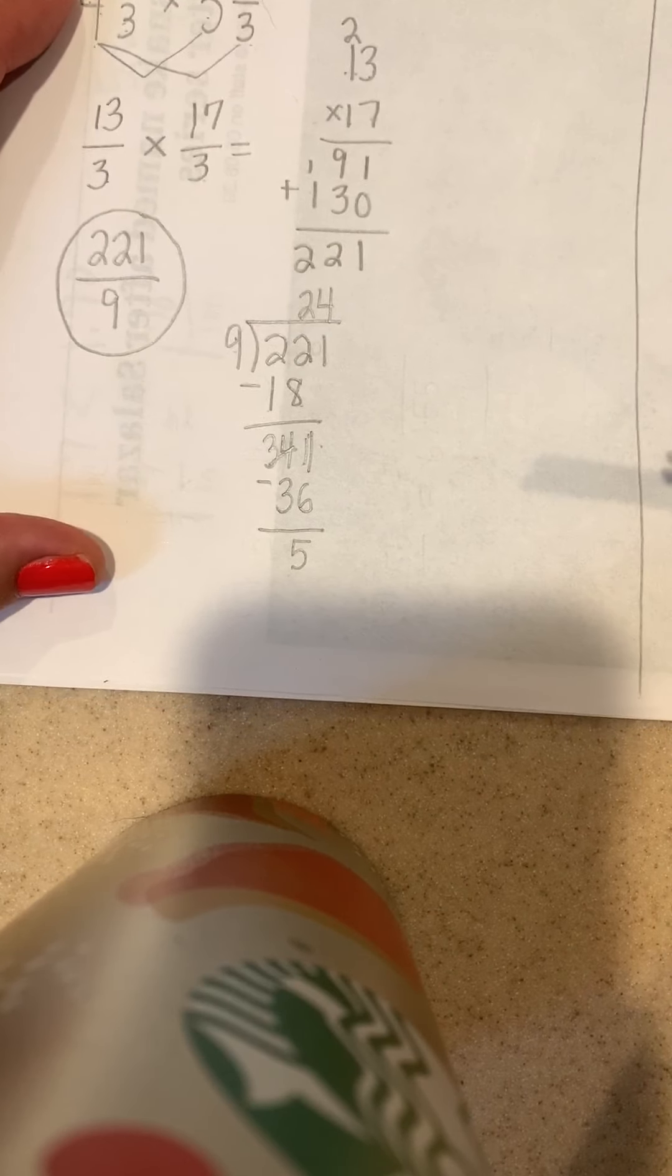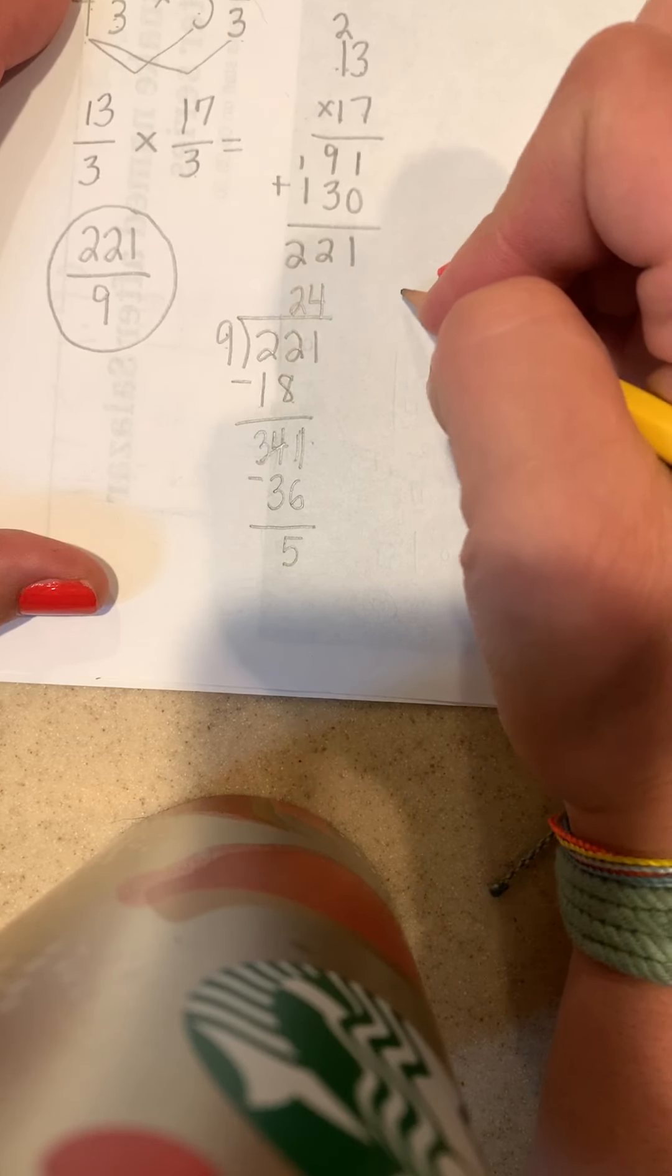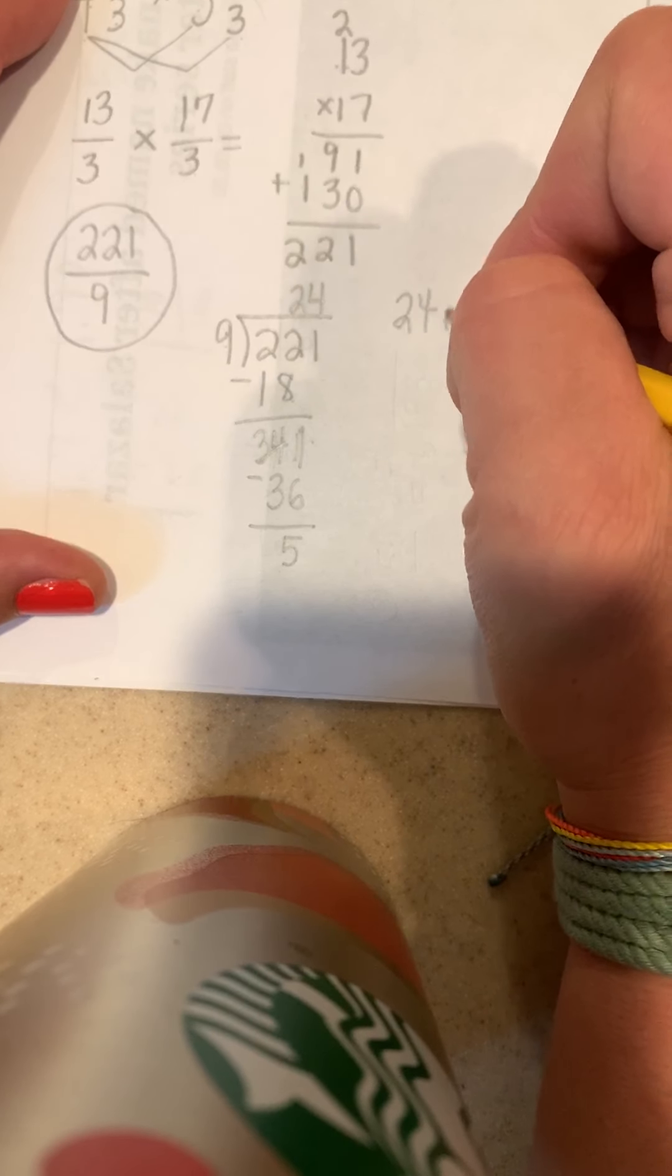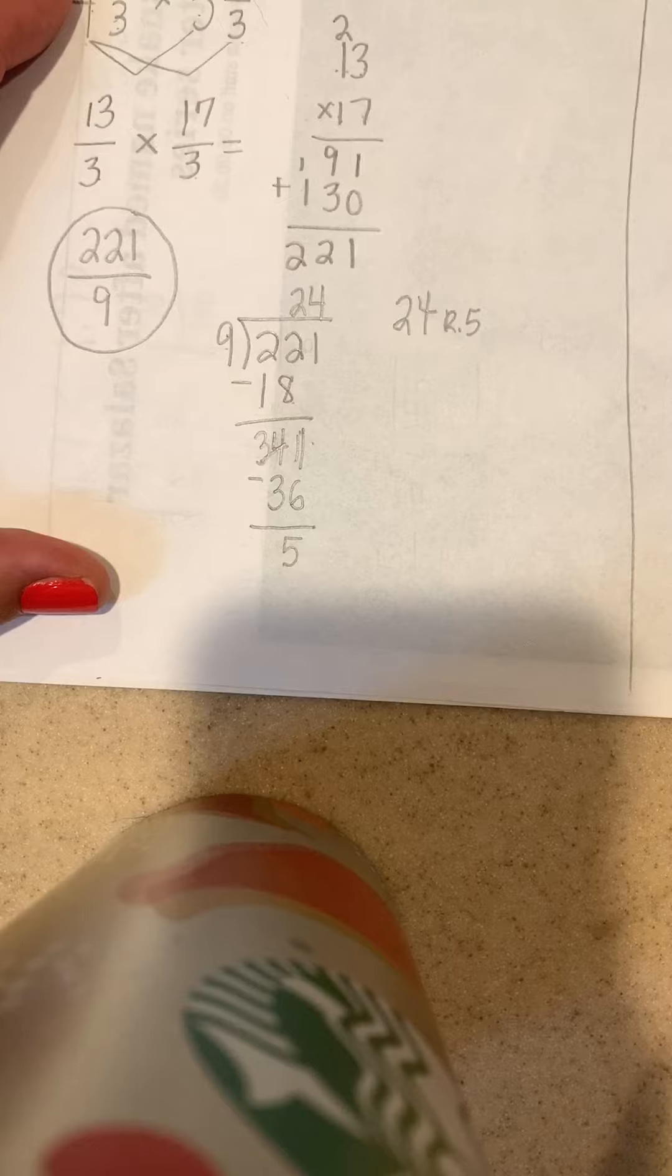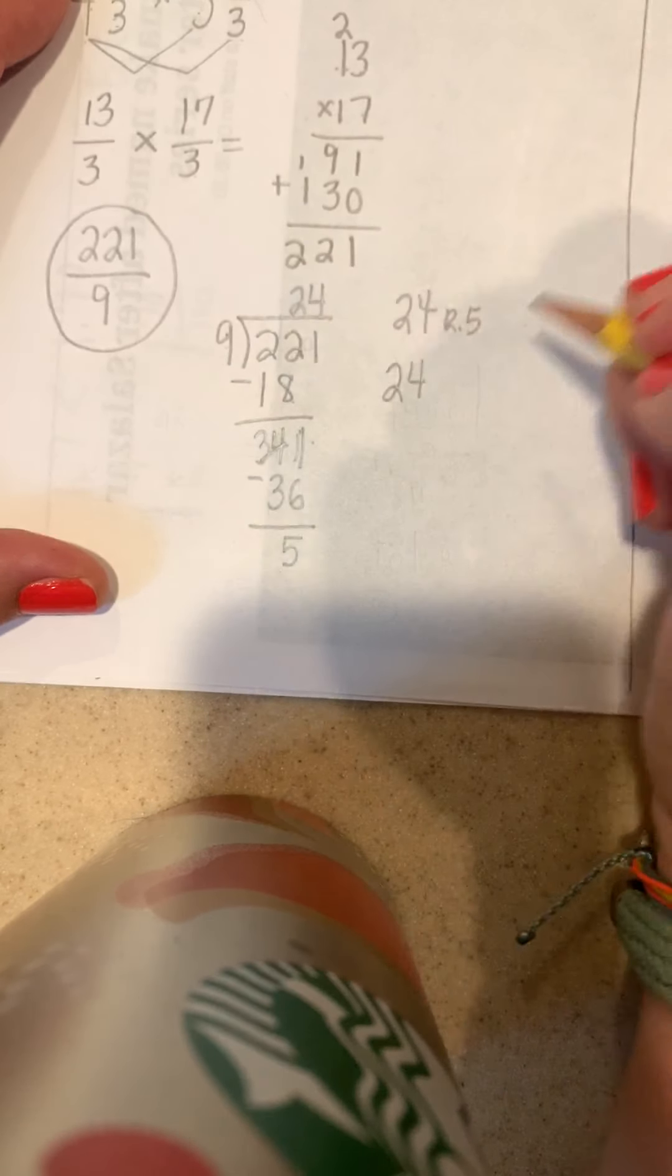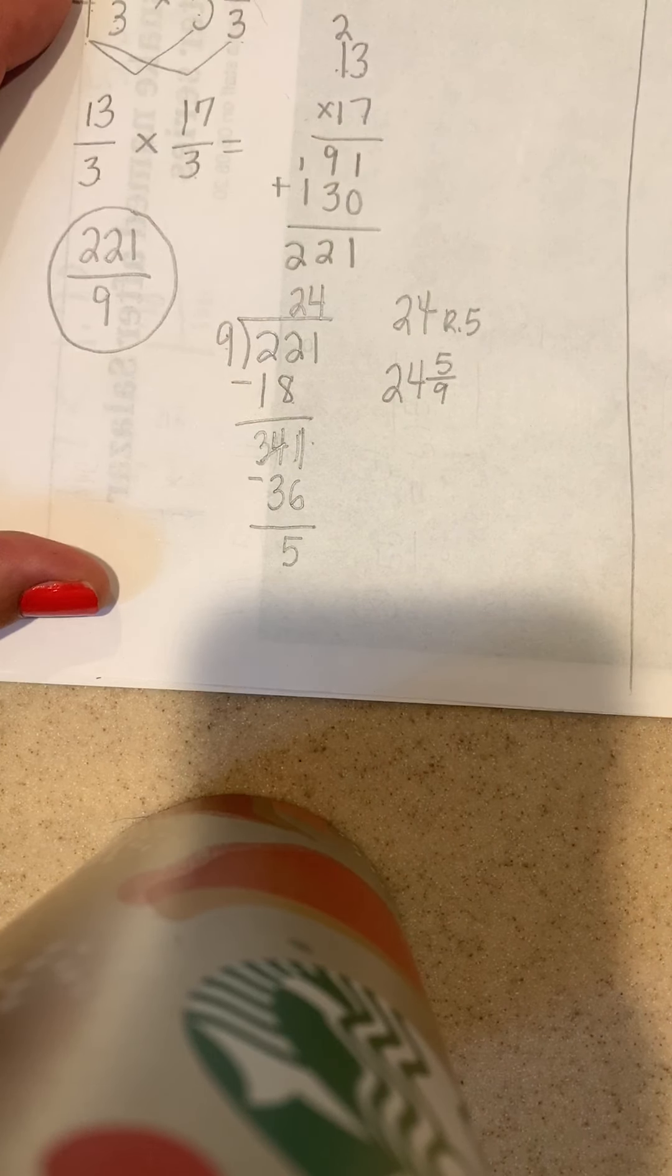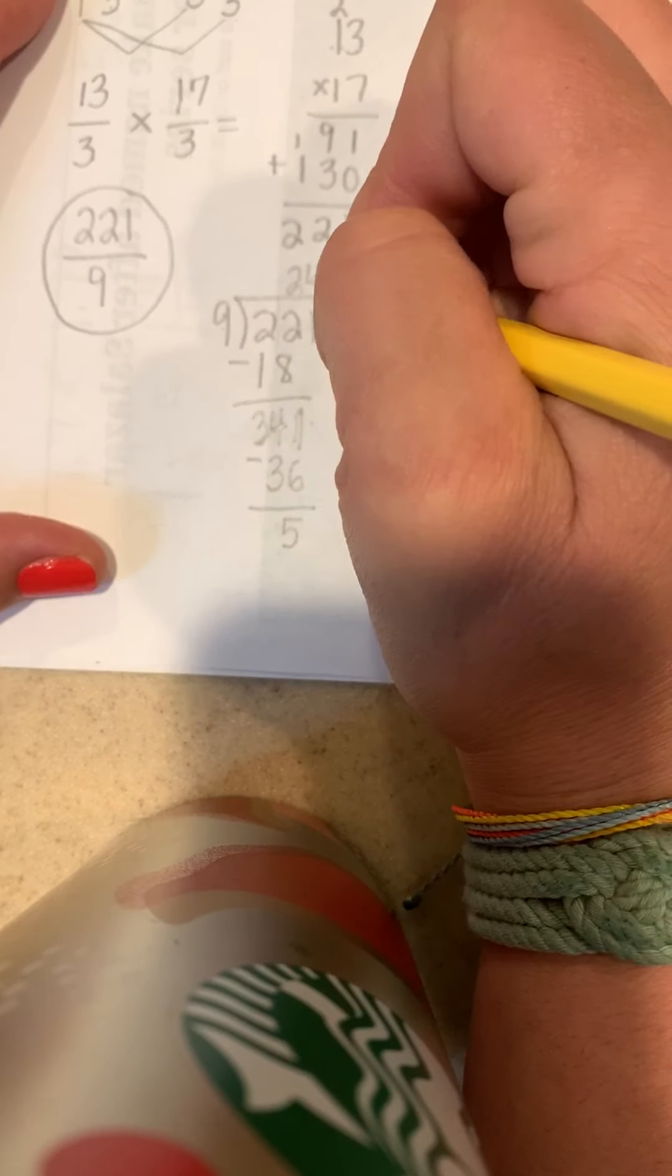Now here's where you have an option. You can do this a couple different ways. You could either report your answer as 24 with a remainder of 5. That seems like so long ago we reported answers like that. It works. You could also report your answer as a mixed number with a fraction. It's out of 9, so it's 24 and 5/9.